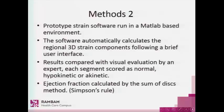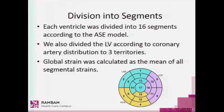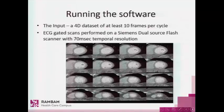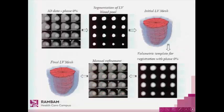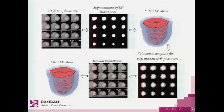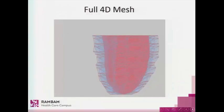The ejection fraction was calculated from the CT by the sum-of-discs method. Each ventricle was divided into 16 segments, and the global strain was calculated as the mean of all segmental strains. The input was an ECG-gated four-dimensional data set of at least 10 frames per cardiac cycle. The software creates an initial LV mesh, and then the user manually refines the edges of the myocardium — the epicard and the endocard — after which a final mesh is created.